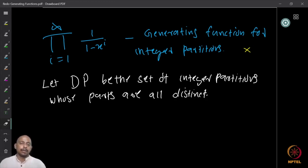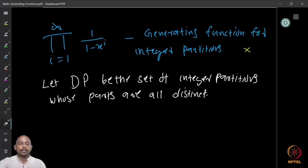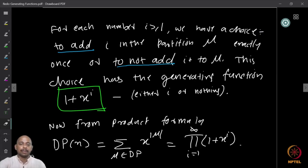So DP is the set of all integer partitions where the parts are distinct, for any integer. For each integer, look at the set of partitions in which the parts are distinct and collect them together — that is the set DP. Now we want to look at the generating function for DP.